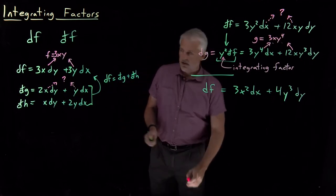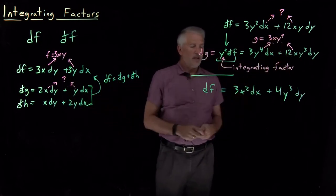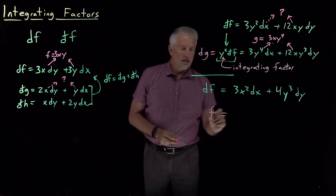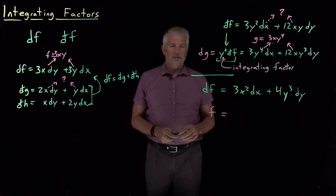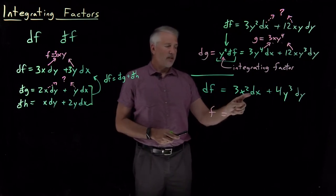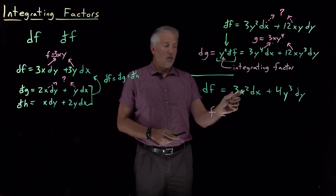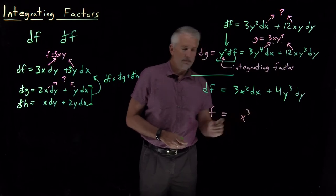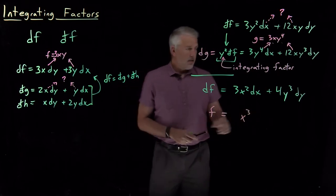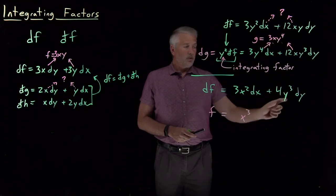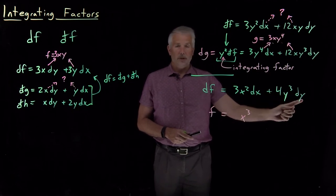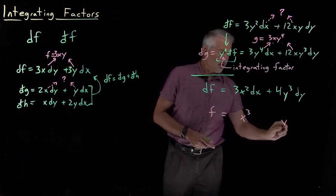And we can, of course, do the same trick we've done every time I write these upwards arrows, and I can ask, is there some original function which gives rise to this differential? And in fact, there is. If I write, if I ask what is the integral of 3x squared, or what function do I need to take the derivative of to get 3x squared, that function is x cubed. Likewise here, there's some function whose derivative, y derivative, looks like 4y cubed, or if I integrate 4y cubed with respect to y, what do I get? The answer there is y to the fourth.